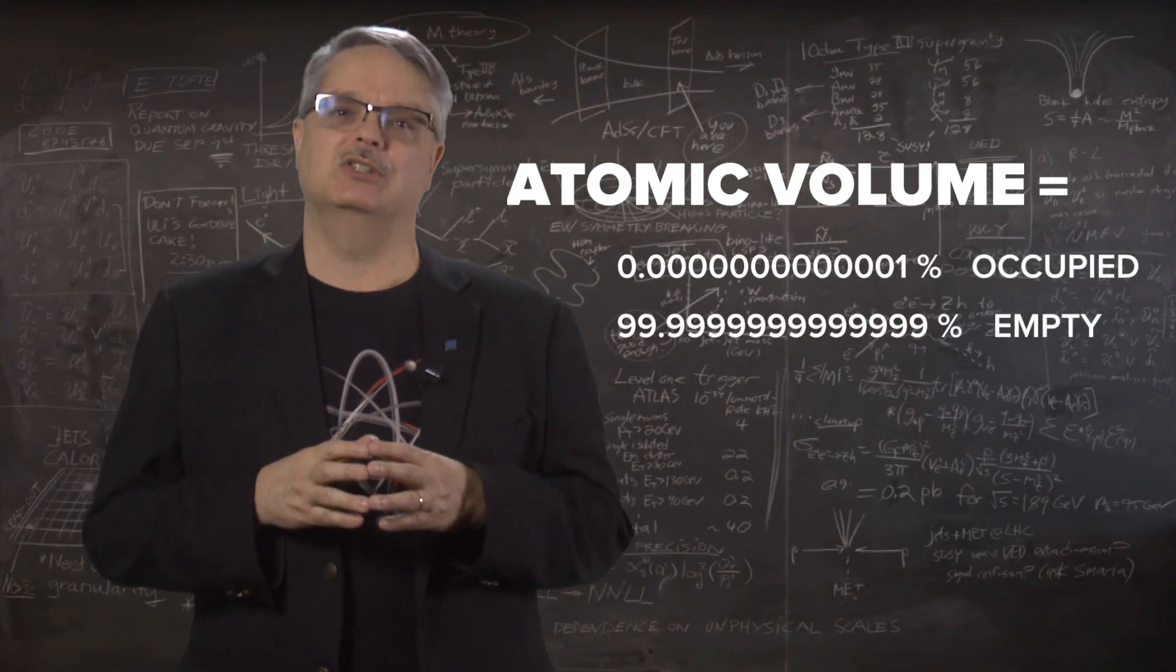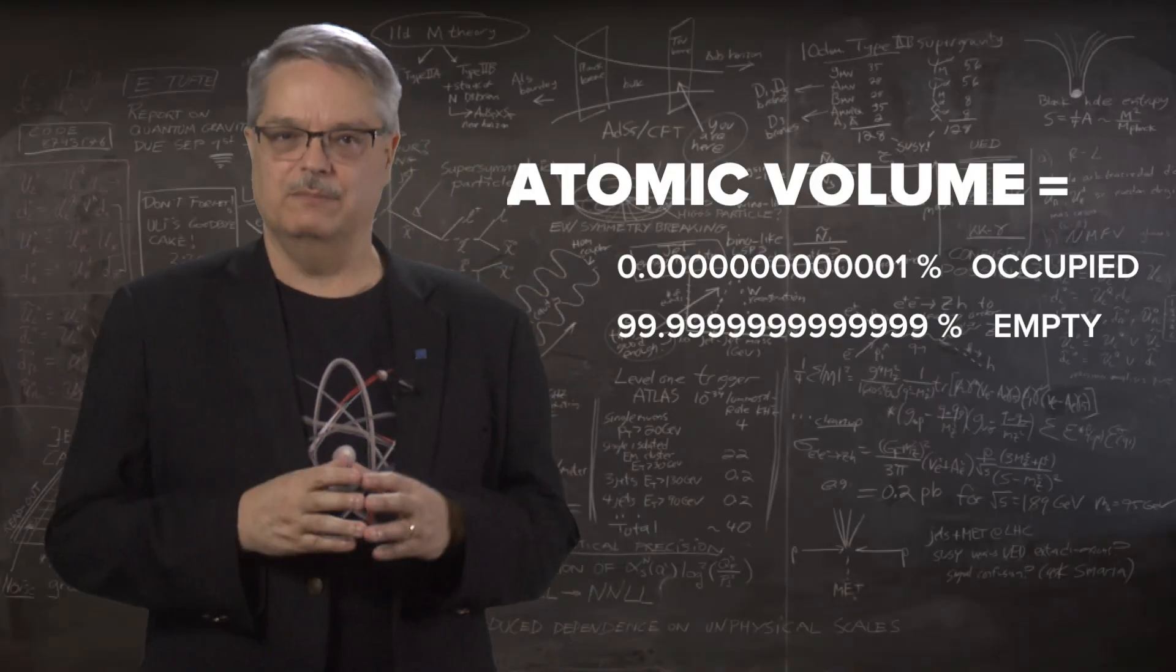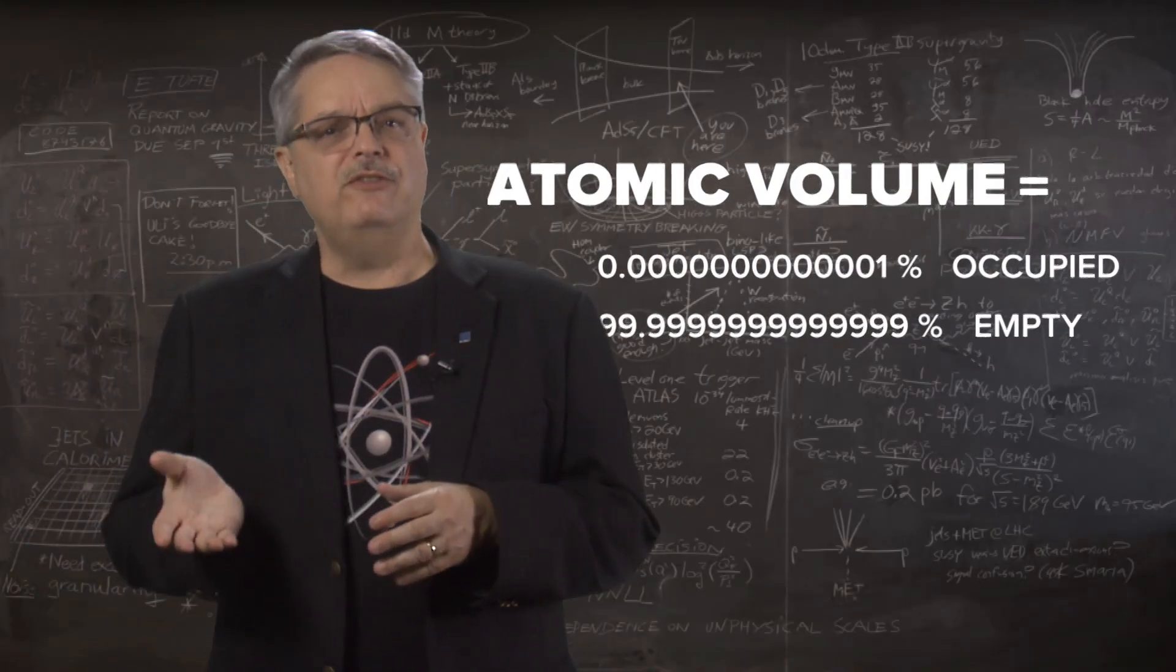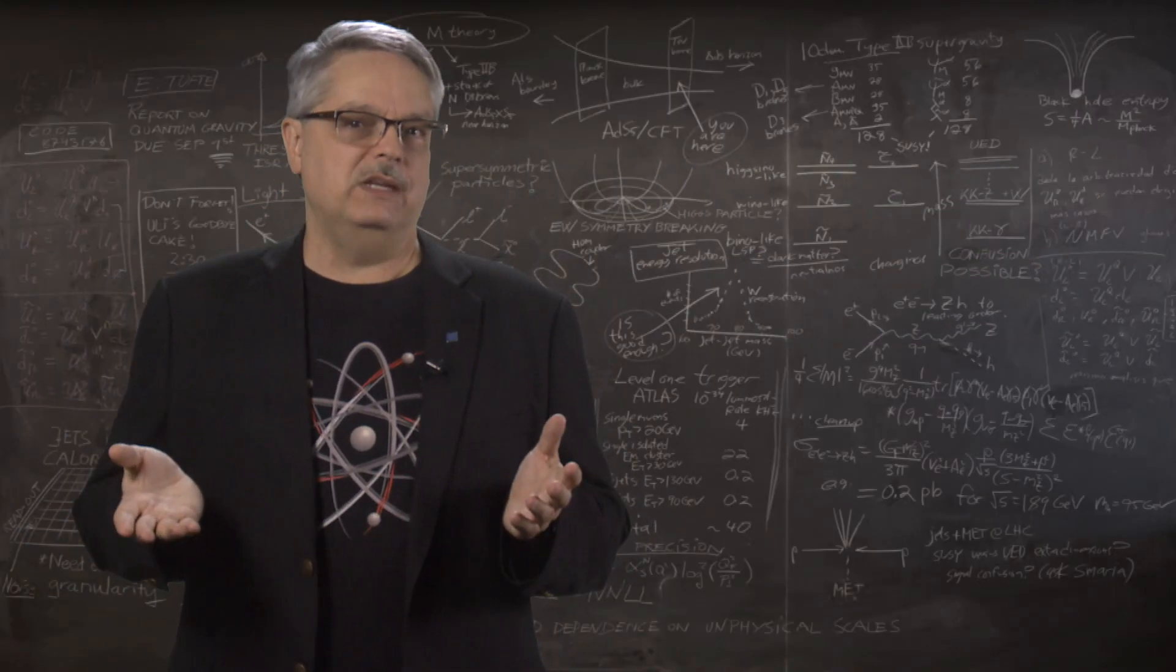Basically, the first approximation, atoms are entirely empty. So if individual atoms are essentially empty space, then even if we pack the atoms tightly together, then matter is basically totally empty. So why is it that we can't put our hands through all matter? What is it that makes solids, well, solid?